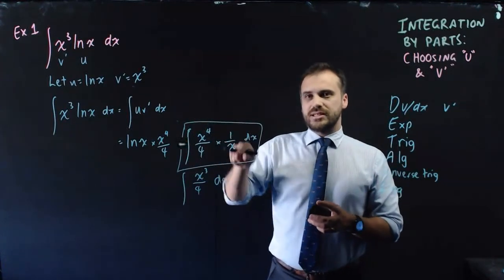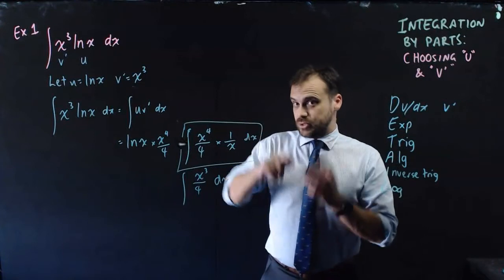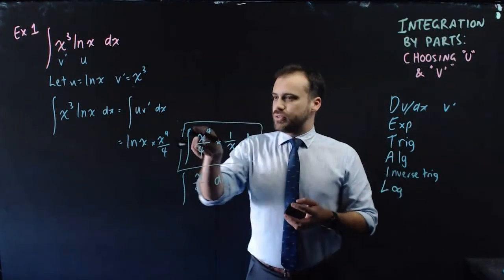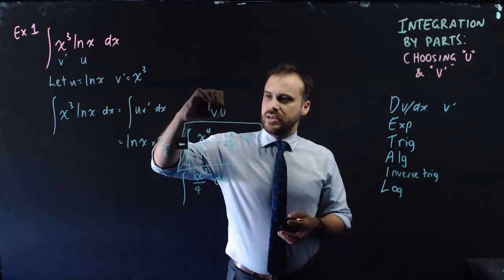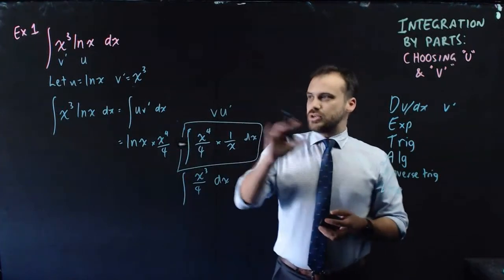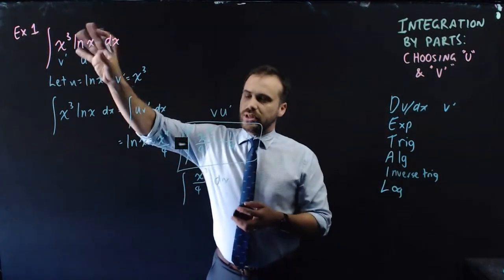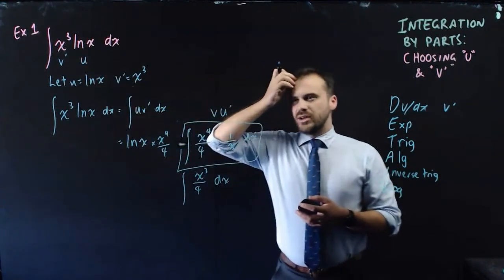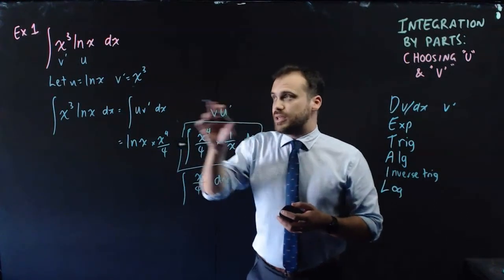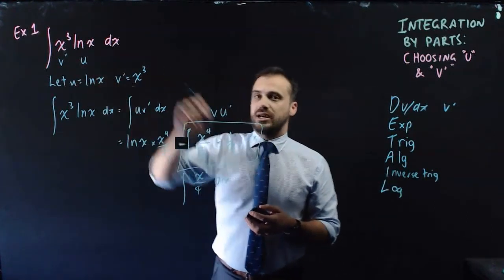If this box ends up becoming an easy integral, then that's what you should do. And remember what this box is. It's v u'. So you can think in your head, when you're looking at the start of the question, and say, right, what will v u' be if I make this v' and that u?